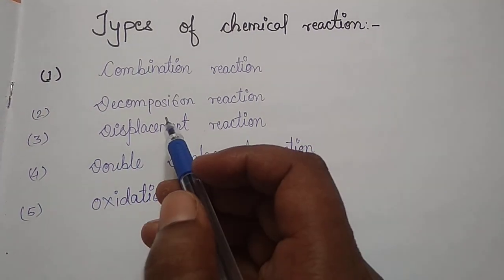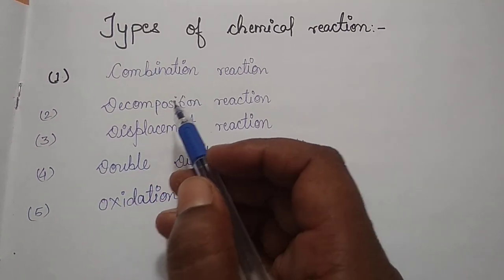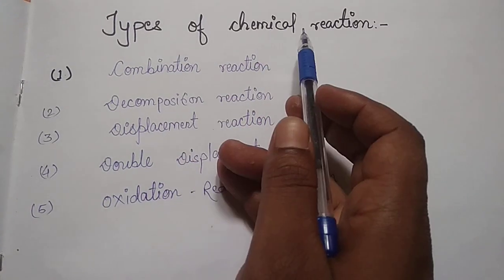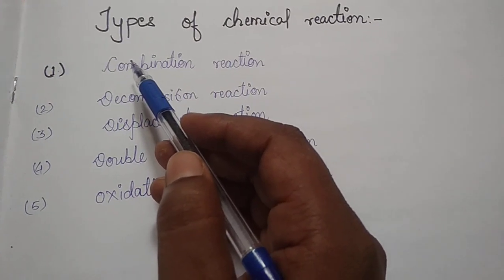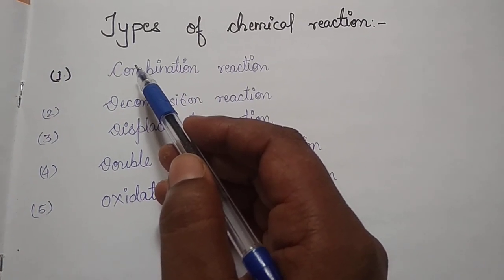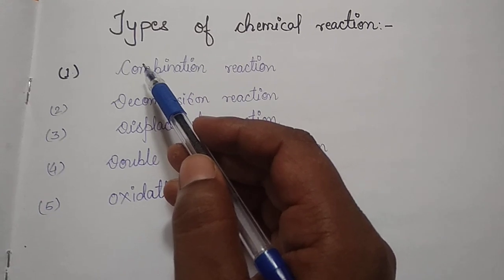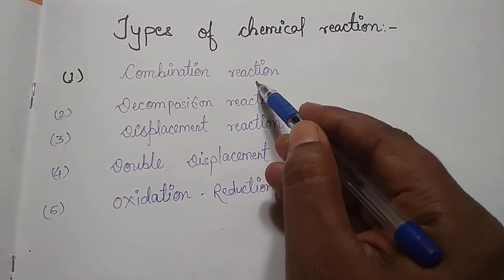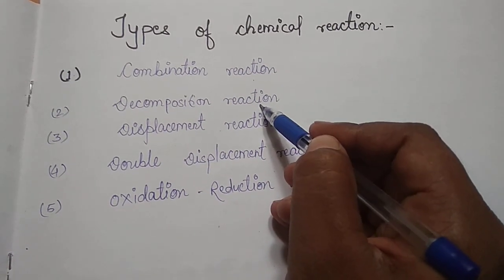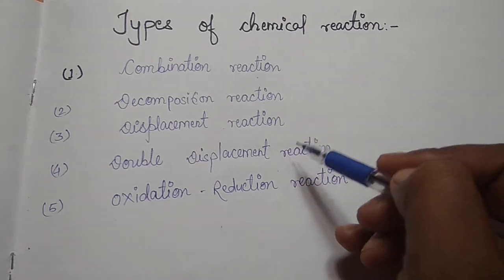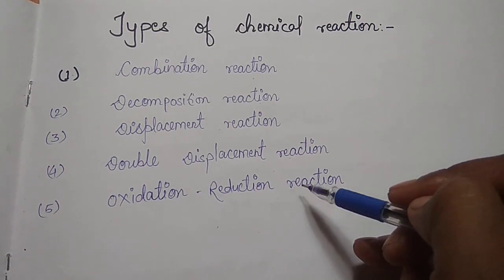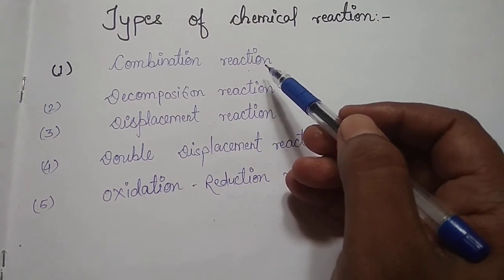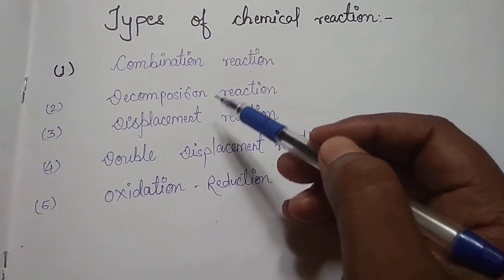Good morning dear students. I'm Viveksar, and today we are going to study class 10th chemistry part 3: types of chemical reactions. There are many types of chemical reactions in chemistry, and we are going to divide them into 5 important types: combination reaction, decomposition reaction, displacement reaction, double displacement reaction, and oxidation reaction. We are going to read each one in detail with examples.